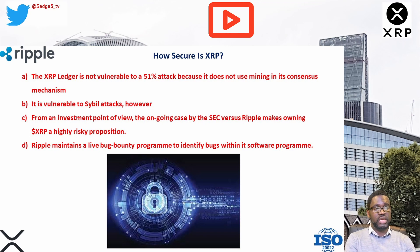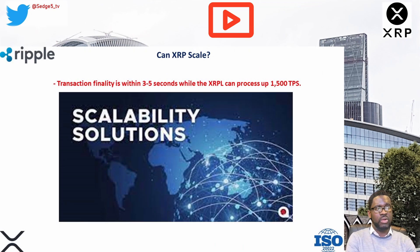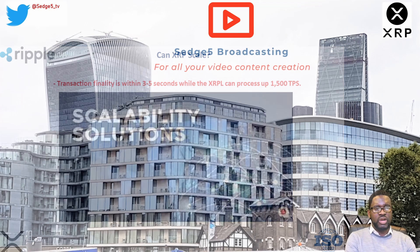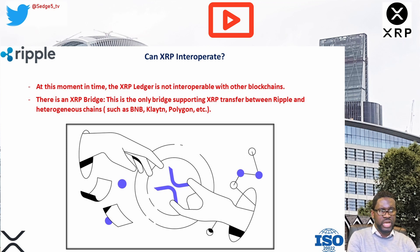As far as scalability is concerned, transaction finality is within 3 to 5 seconds, while the XRP Ledger can process up to 1,500 transactions per second. Now onto interoperability: at this moment in time, the XRP Ledger is not interoperable with other blockchains. There is, however, an XRP bridge — the only bridge supporting XRP transfers between Ripple and heterogeneous chains such as BNB, Klaytn, Polygon, and so forth. Let us know in the comments if you have used this bridge and whether it is user-friendly.